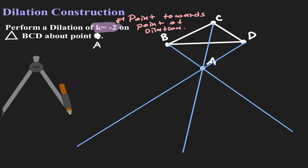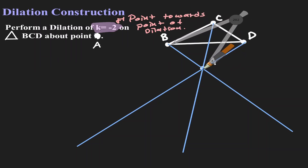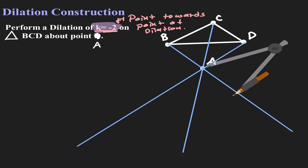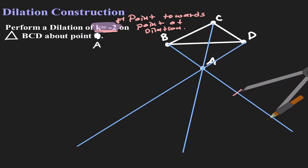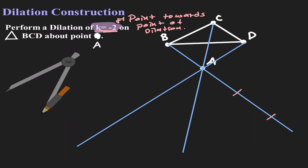Let's start with point B. Let's place our metal leg at point B and find the original distance from B to the point of dilation, which is A. Now let's double that distance starting from A — so from A, this is one distance, and here we have two distances. This location is where we are going to find B', where B got dilated from point A in a negative direction with a scale factor of 2, i.e., a scale factor of negative 2.